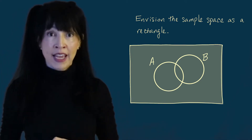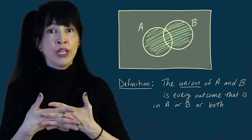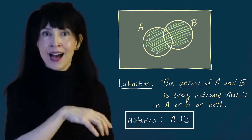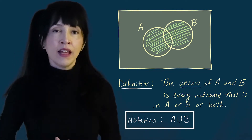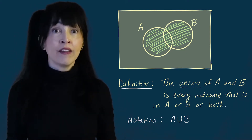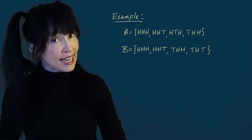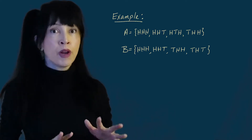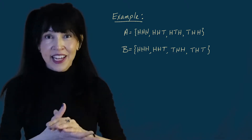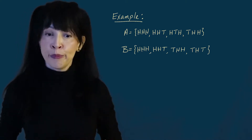The union of A and B is a new set, and it consists of everything that's in A or B or both. We denote a union by writing A and then this U — it's just a cup shape — then B. So A union B consists of everything that's in A or B or both.